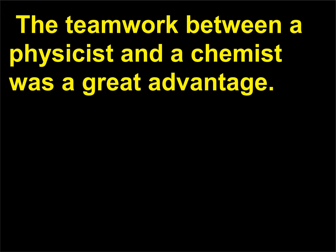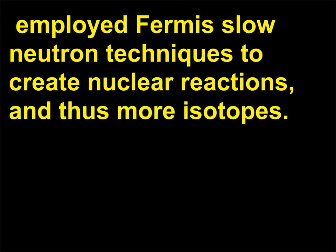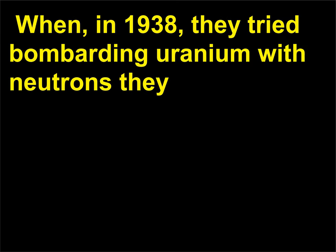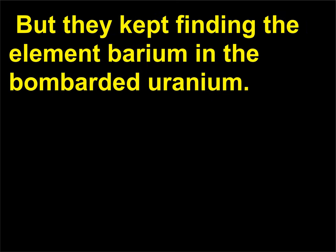Hahn and Meitner, together with Hahn's young assistant Fritz Strassmann (1902–1980), employed Fermi's slow neutron techniques to create nuclear reactions and thus more isotopes. When in 1938 they tried bombarding uranium with neutrons, they expected to create new elements beyond uranium in the periodic table, but they kept finding the element barium in the bombarded uranium.